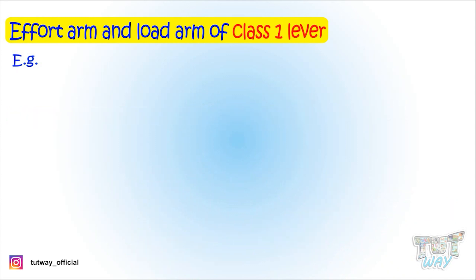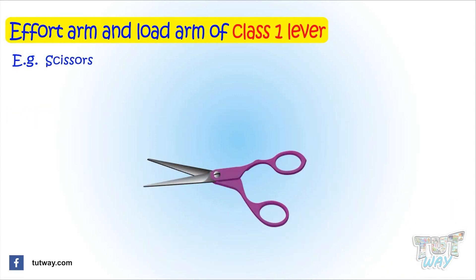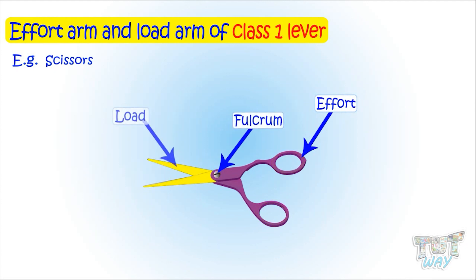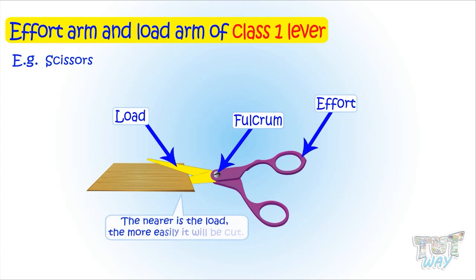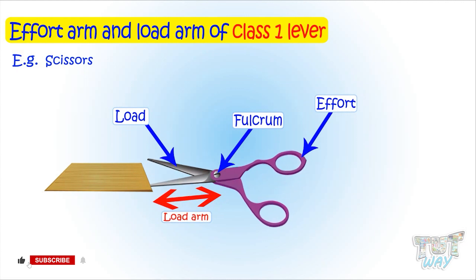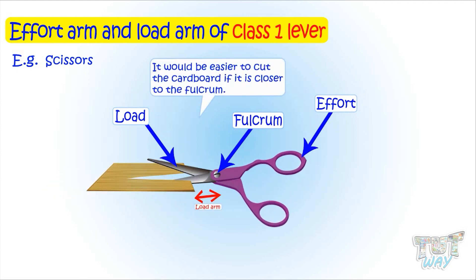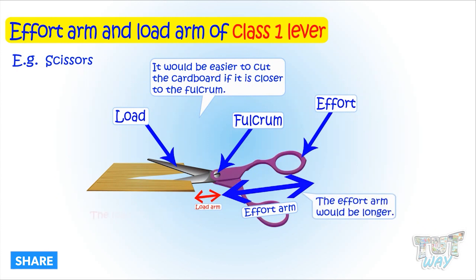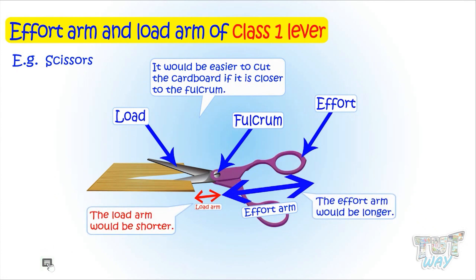Here we have a pair of scissors. Scissors too work on the principle of a lever. This is its effort, this is the fulcrum, and this is the load area — here we place the load. The nearer the load to the fulcrum, the more easily it will be cut, as the load arm would be smaller. So if you want to cut a cardboard with scissors, placing it far will be difficult, but placing it nearer to the fulcrum makes it easier as the effort arm would be longer and load arm would be shorter.